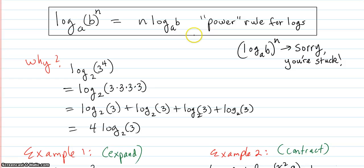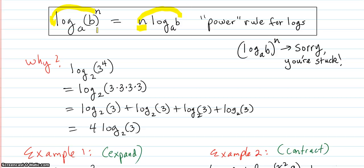Now we have the power rule for logs. Log base a of a quantity to the n power equals n times log base a of b. In other words, you can take the n and bring it down to the front. You can also work it backwards — if it's in the front, you can bring it up as the exponent. That's the power rule for logs. If you have an entire log raised to a power, you're stuck with that.